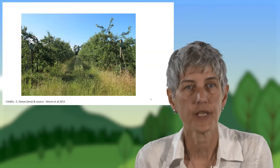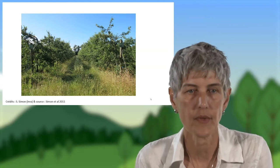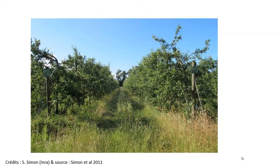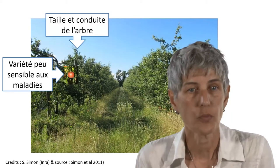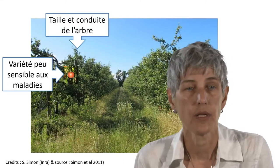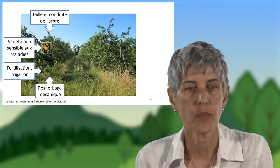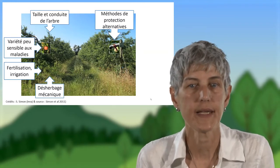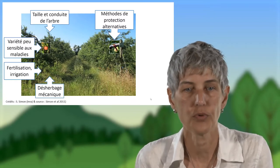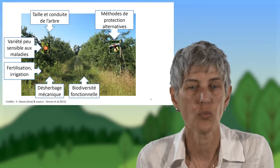Voici un exemple d'ingénierie agroécologique réalisée dans un domaine expérimental et publiée en 2011 par Simon et collègues. Elle avait pour objectif de réduire la dépendance des vergers de pommiers aux pesticides chimiques. Des connaissances ont été mobilisées pour implanter des variétés peu sensibles aux maladies, pour ajuster les opérations culturales — la taille et la conduite de l'arbre, mais aussi la fertilisation et l'irrigation — de manière à ce qu'elles ne favorisent pas les maladies et les ravageurs. Le désherbage mécanique est appliqué sur le rang pour éviter le recours aux herbicides. Des méthodes de protection alternatives sont préférées, comme la confusion sexuelle pour lutter contre le carpocapse des pommes, la chenille des pommes. Et enfin, des bandes fleuries sont installées dans le rang pour attirer les auxiliaires.